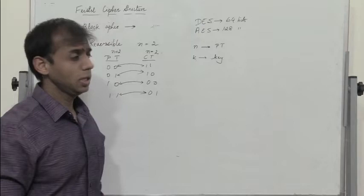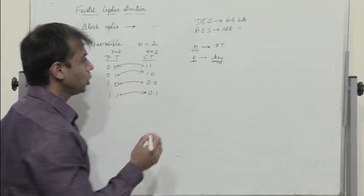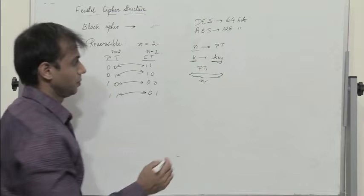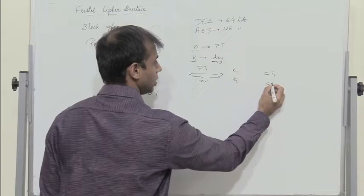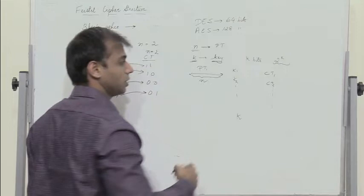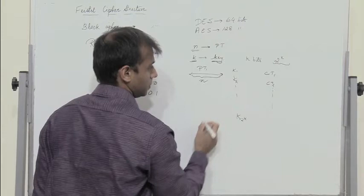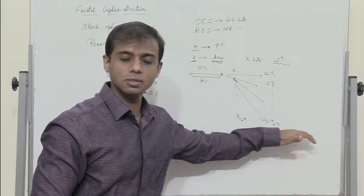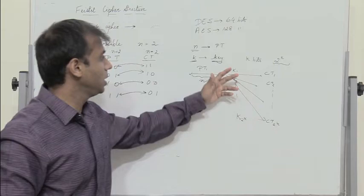So let the length of the plain text be n bits and length of the key be k bits. Now for a given plain text of length n, how many different possible keys can we use? We can actually use 2^k keys. Using the first key gives one ciphertext, the second key gives another ciphertext, and since the length of the key is k bits, we have 2^k number of different possible keys. To ensure that the transformation from plain text to ciphertext is unique, the number of transformations possible should be equal to 2^k, where k is the length of the key.